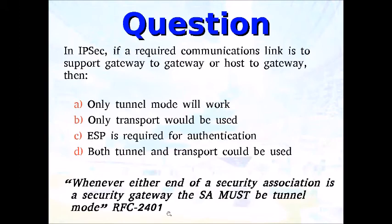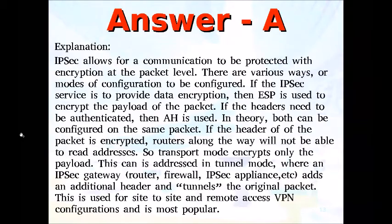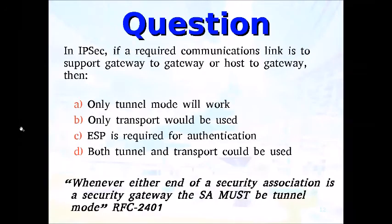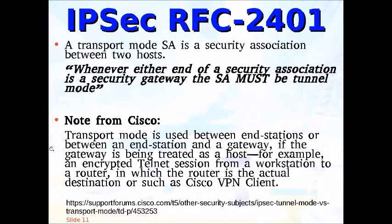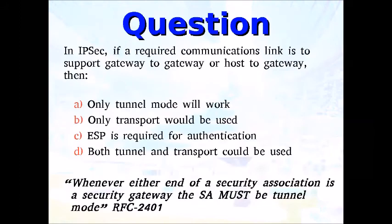Spock raises an edge case: he configured a transport mode VPN terminated at a gateway to remotely administer the gateway. Kirk reasons: in that case, wouldn't the gateway be acting as a host? Spock: 'Relatively speaking, yes — the gateway is being treated as a host.' Kirk: 'Then I'm sorry, Spock, the answer truly must be A.' The only way to argue answer D is if you're doing transport to a gateway to remotely administer it — but in that case the gateway is being treated as a host. Semantically, the question cannot possibly mean that.